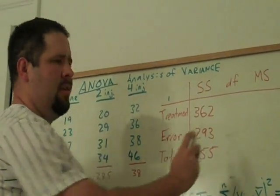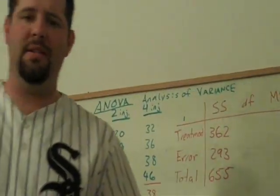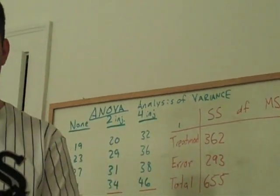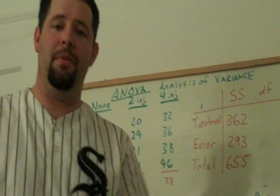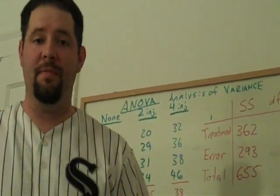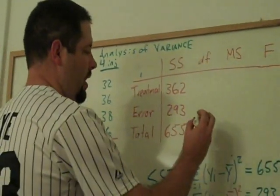There's this column in ANOVA tables that is the degrees of freedom column. Now, you may remember that when we estimate the mean using the total variability, we have the sample size minus one degrees of freedom. Well, that holds true here as well.